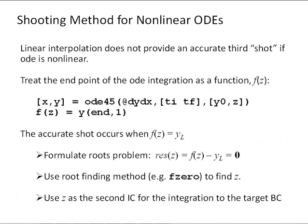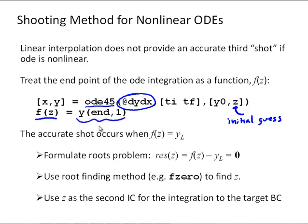The basic idea here is to treat the end point of the ODE integration as a function. Here's our ODE function, dy/dx, and we'll call ODE45 or some other initial value problem solver to integrate that function with an initial guess for our second boundary condition — we'll just call that z. f of z is defined as where did we end up: the end point of the integration.